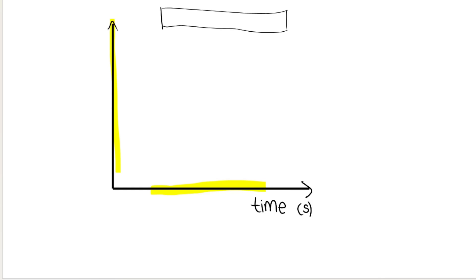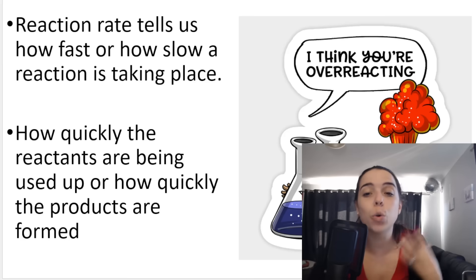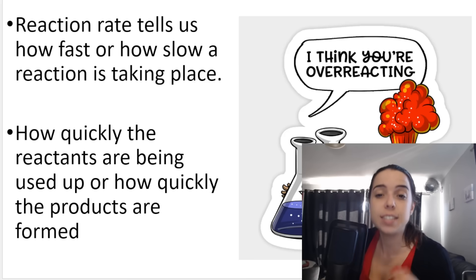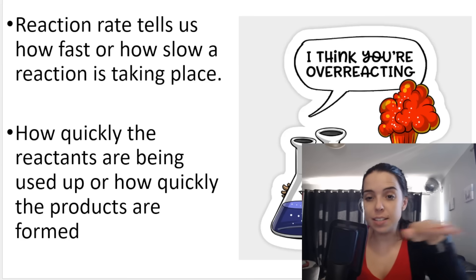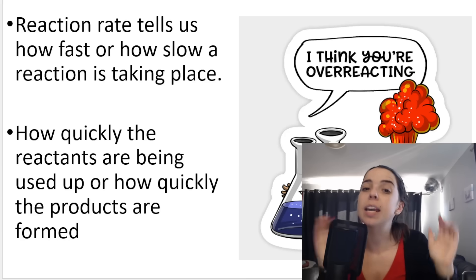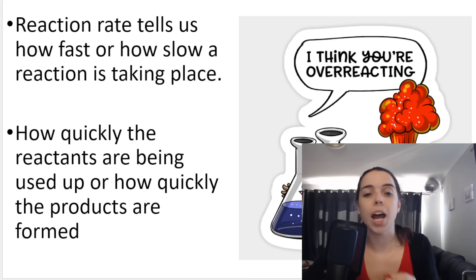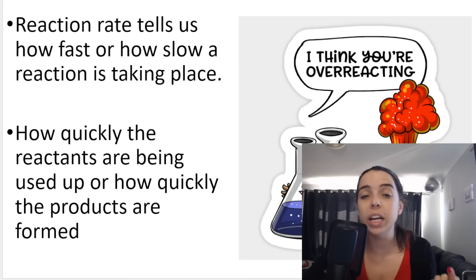On the y-axis, we can represent a number of different variables. To represent a reaction rate — how quickly a reaction is taking place — we need to represent time on the x-axis because it is basically what is happening as time goes on. To calculate rates of reaction, we look at how quickly the reactants are being used up or how quickly products are being formed.